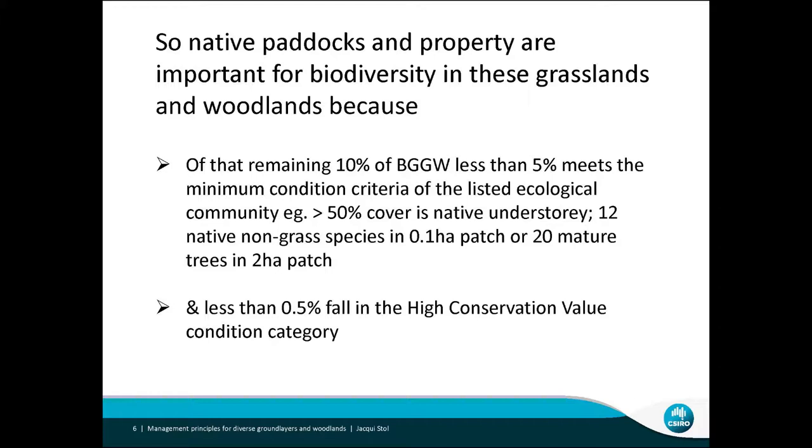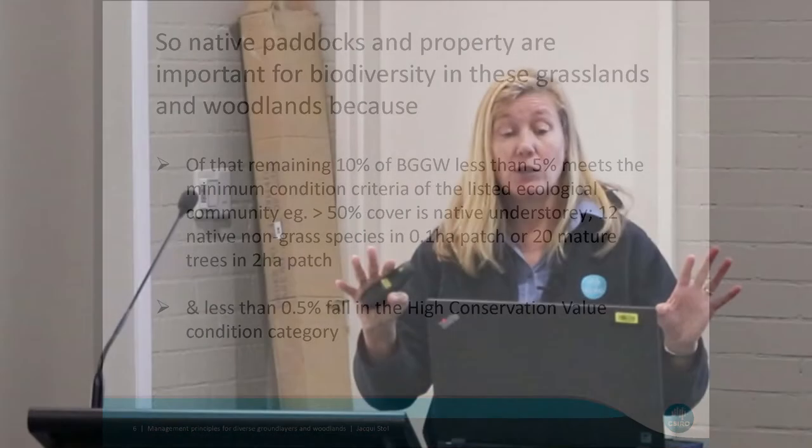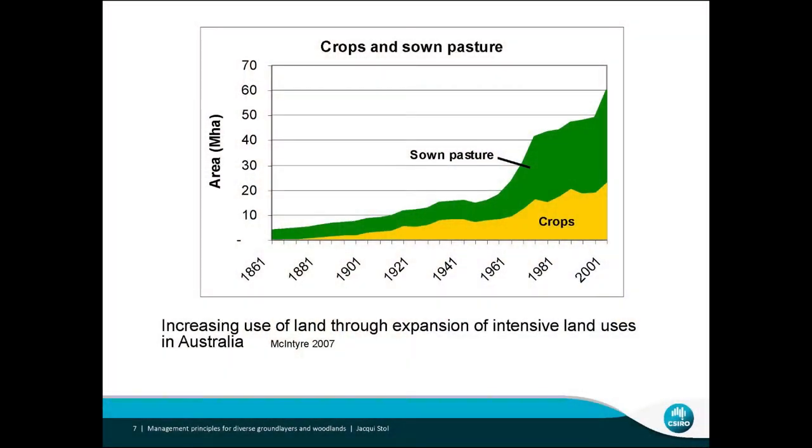Your native paddocks and properties are really important in these ecological communities because most of this occurs on private lands. Of that remaining 10% of box gum grassy woodlands, less than 5% meets the minimum condition criteria — meaning more than 50% coverage needs to be native, or there might be 12 non-grass native species in a 0.1 hectare patch.